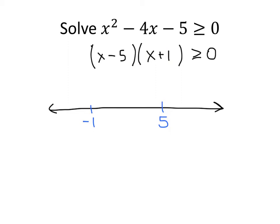Let's make a little chart. For x minus 5: in the leftmost section of the number line, because x is less than 5, x minus 5 is negative. In the middle section, between negative 1 and 5, x is still less than 5, so x minus 5 is still negative. But once we get past 5, x minus 5 becomes positive.